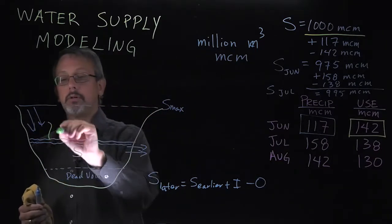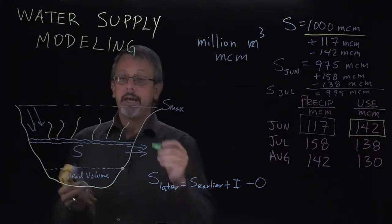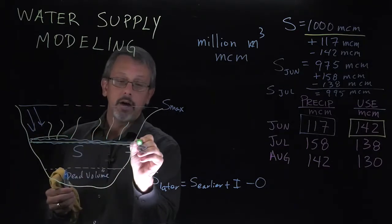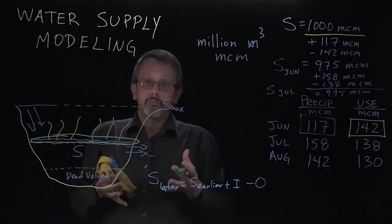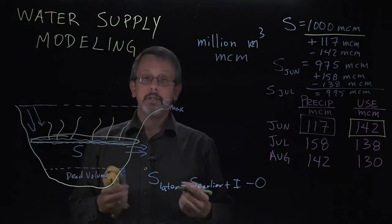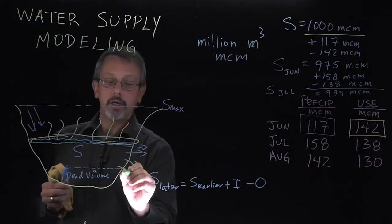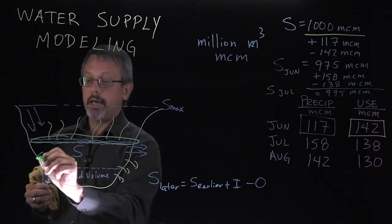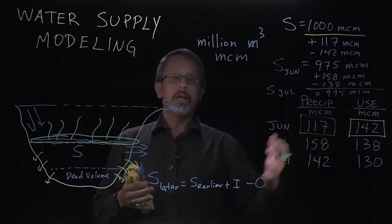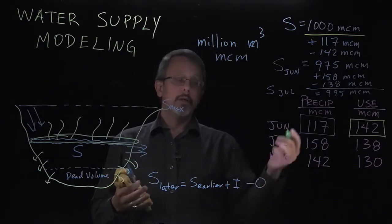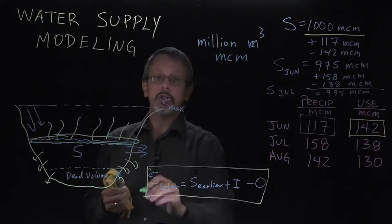For example, evaporation. Particularly in the hot summer months, you're going to have a fair amount of evaporation. Evaporation is going to depend on the surface area of your reservoir, which will depend in turn on how much storage you have. So it can get fairly complex fairly quickly in making estimates on things like evaporation. Similarly, things like groundwater exchange and or other uses might complicate that system a little bit. However, you can do some simple water supply modeling using addition and subtraction and this relationship between storage, input, and output.